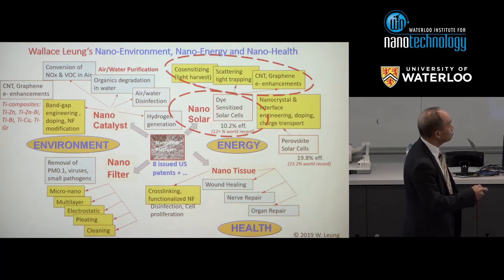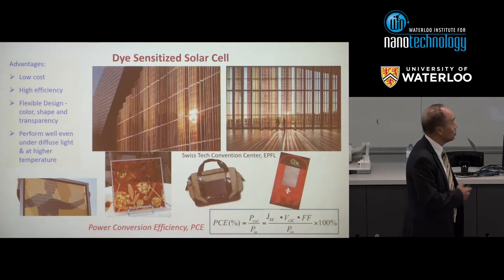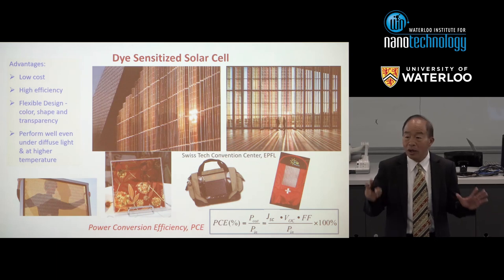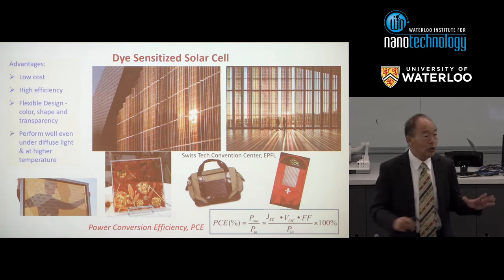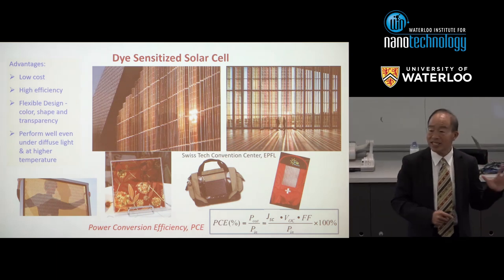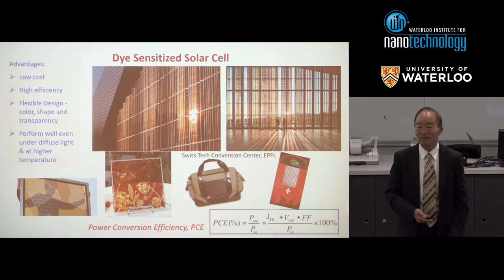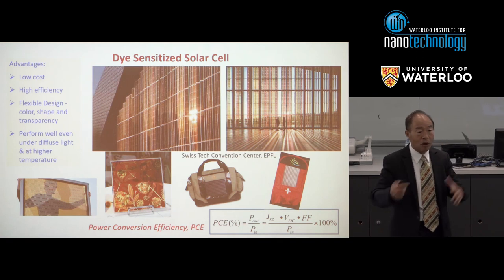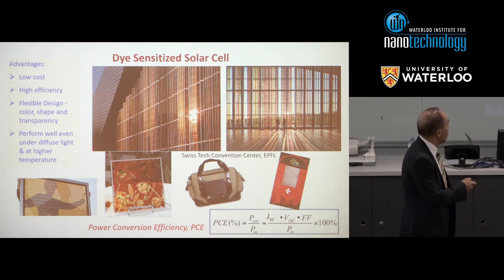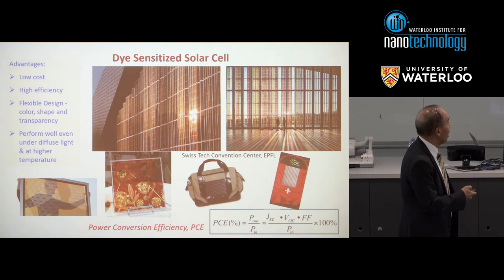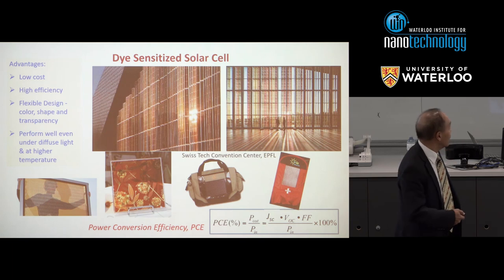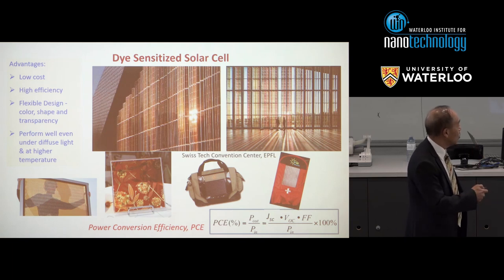I'd like to talk about dye-sensitized solar cells. It's actually a very pretty cell — you don't need to put it on the ground floor. You can put it on windows because it's semi-transparent and colorful, so you don't have to worry about land usage. It's almost a mimic of photosynthesis — flexible with all kinds of good properties.